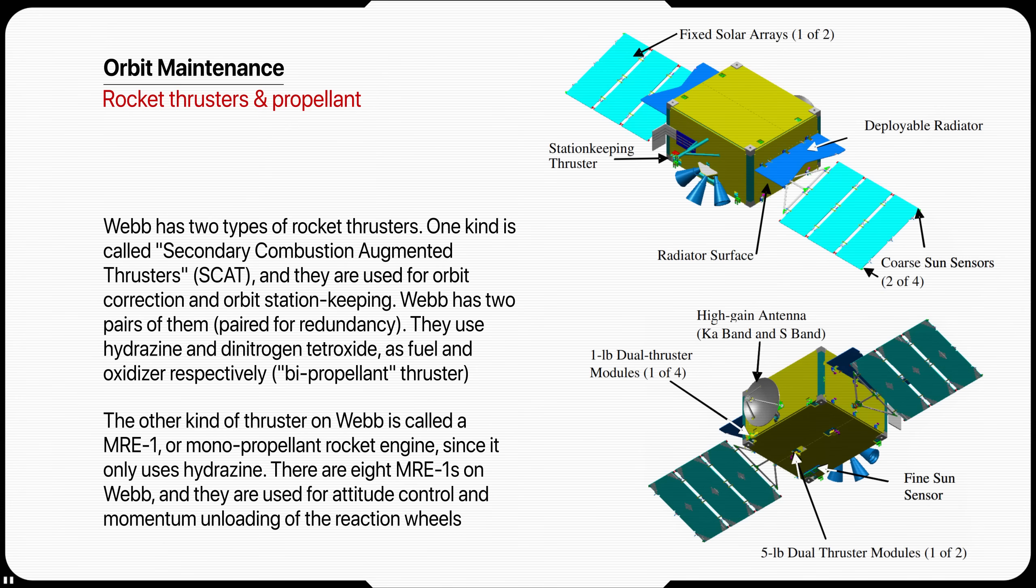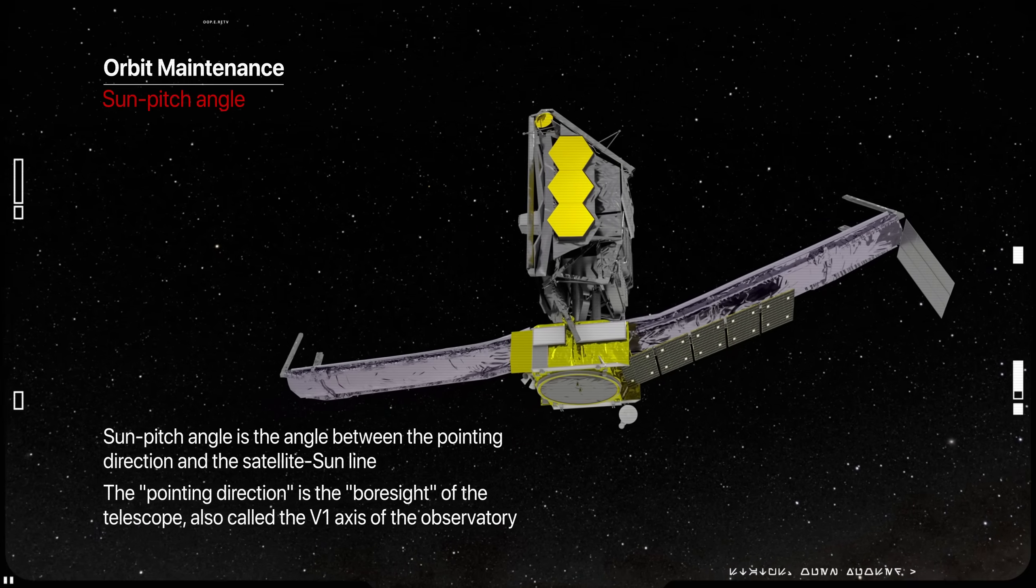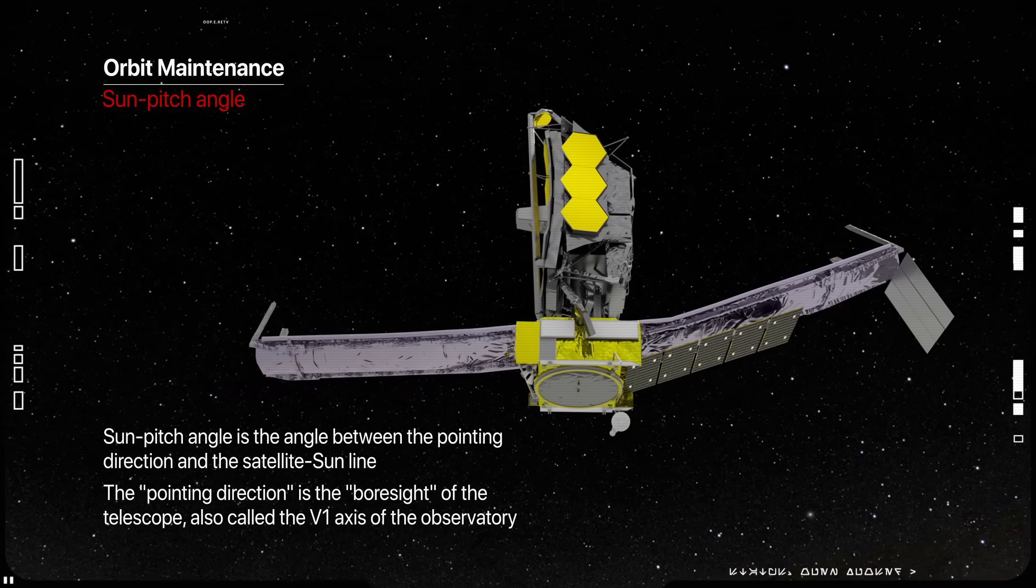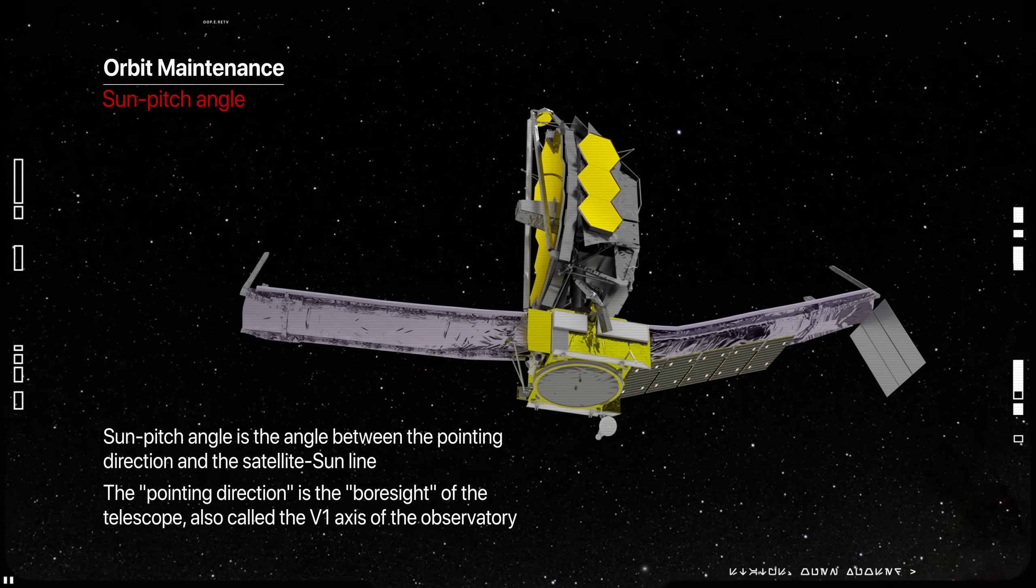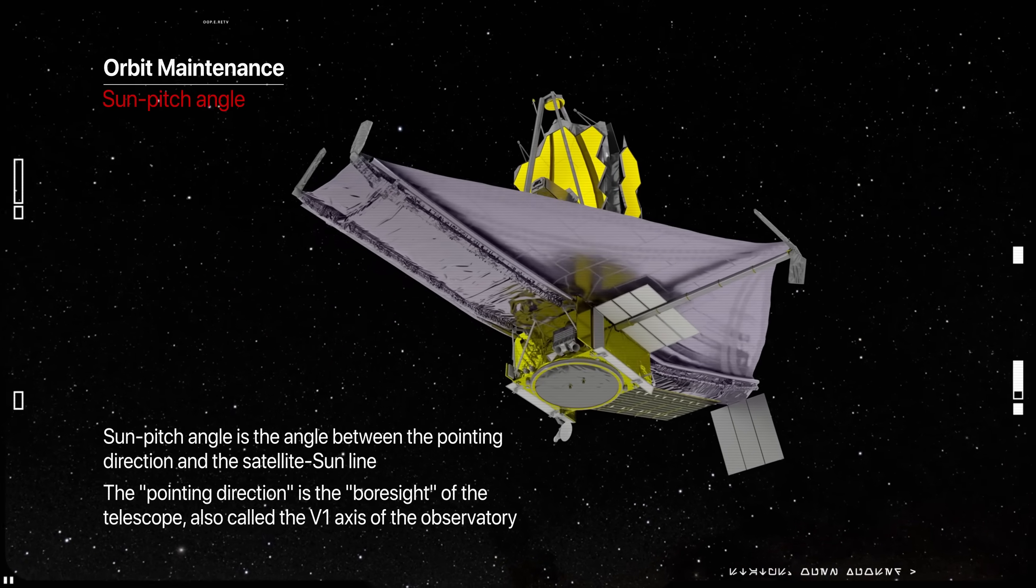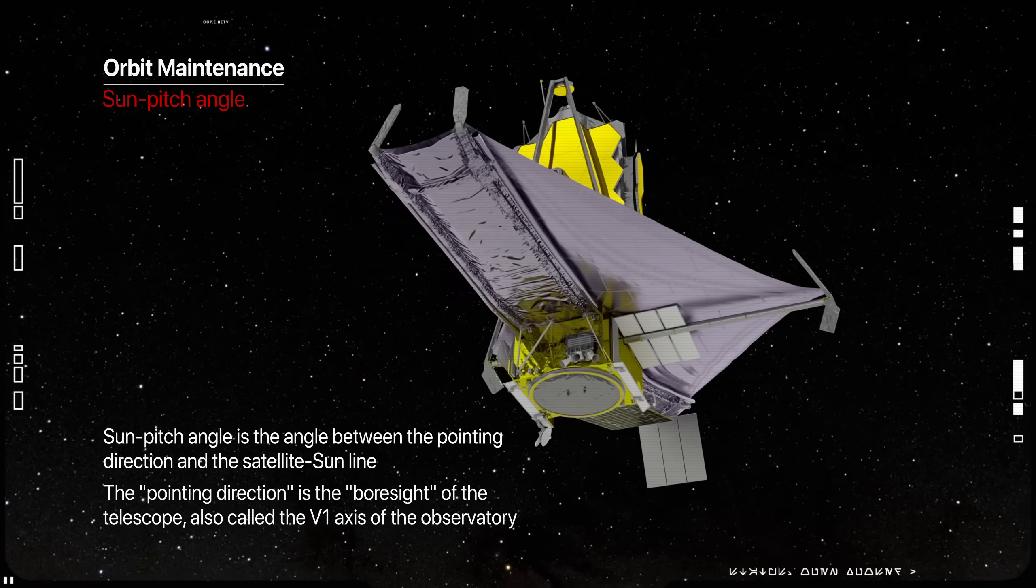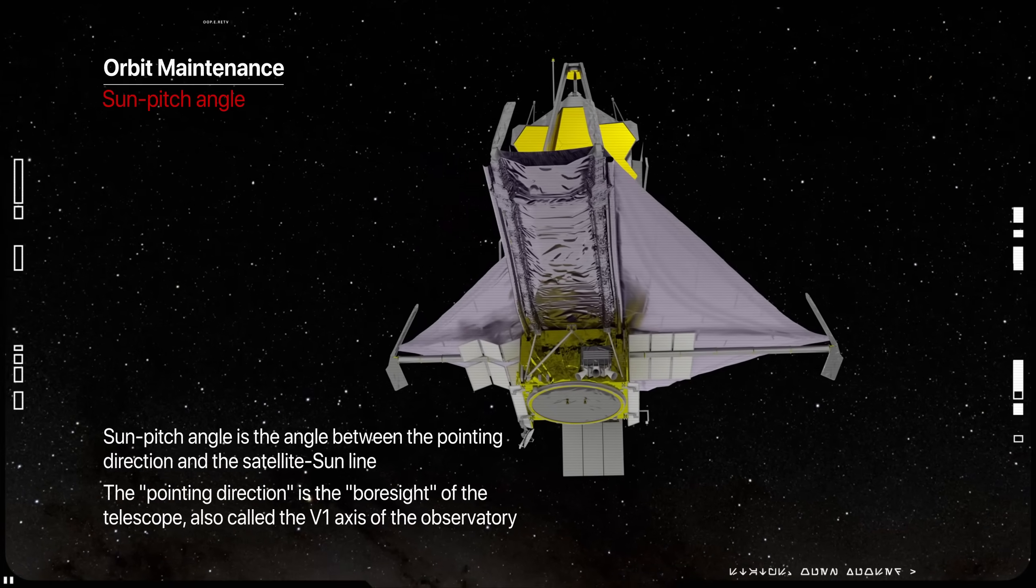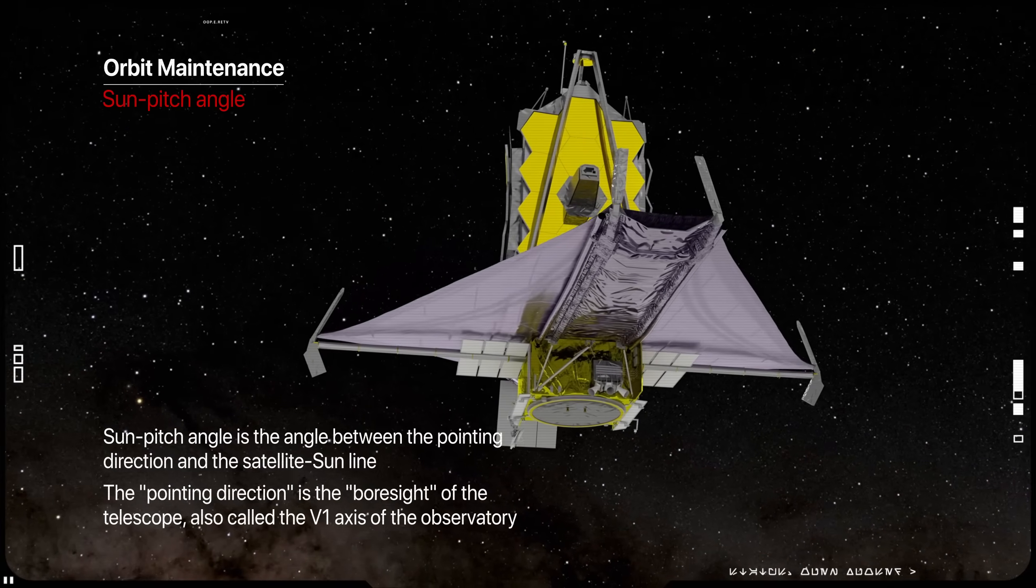Thrusters are mounted on the spacecraft bus, located on the side of the sunshield facing the sun. Those used for orbit correction are oriented as far away from the sunshield as possible. The sunshield can support a large sun-pitch angle for orbit correction than that allowed for science operations. A sun-pitch angle is the angle between the pointing direction and the satellite sunline. The pointing direction is the bore side of the telescope, also called the V1 axis of the observatory.